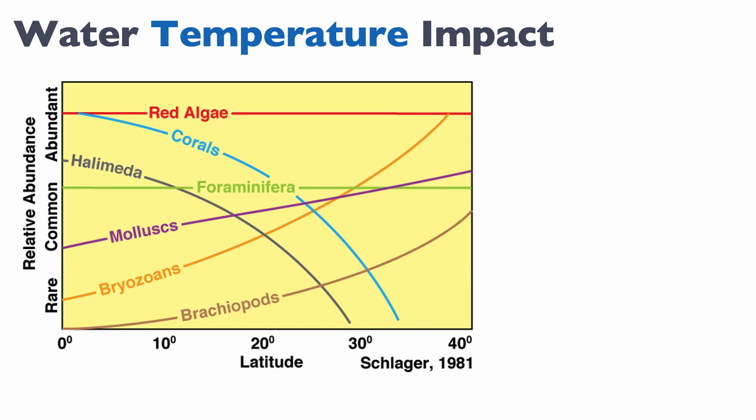This, of course, translates into a temperature control on the reefs. Modern corals are extremely sensitive to water temperature. So on this graph here, you can see different types of organisms that exist in modern carbonate systems. One that you're very familiar with is corals, the light blue lines. But we'll also talk about halimeda, which is a green algae that precipitate a calcium carbonate skeleton. Halimeda is also very common in tropical seas. The vertical axis represents relative abundance of these different grains. The horizontal axis represents latitude from 0 to 40 degrees.